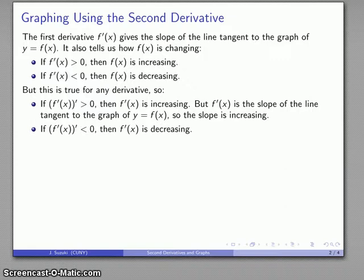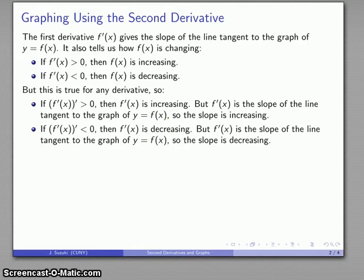Similarly, if the second derivative is negative, then that tells me the slope of the tangent lines are decreasing as we move from left to right.